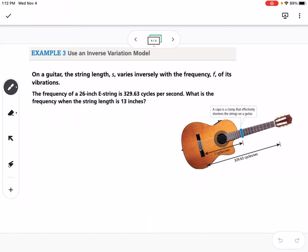This says on a guitar, the string length s varies inversely with the frequency f of its vibrations. The frequency of a 26-inch E string is 329.63 cycles per second. What is the frequency when the string length is 13 inches? Again, we can write our equation. It says that s varies inversely with f, so we need to find the constant of variation, our k value.